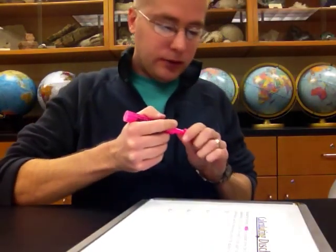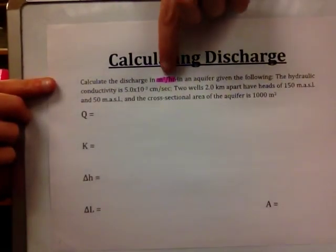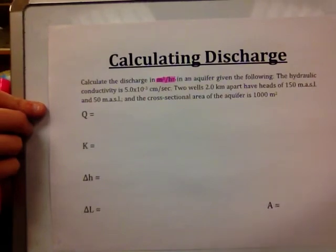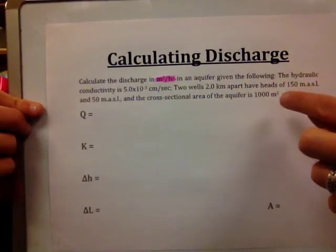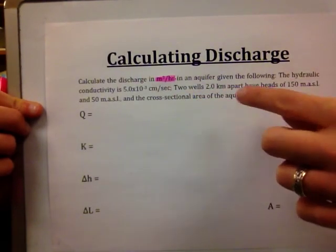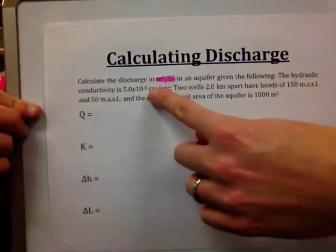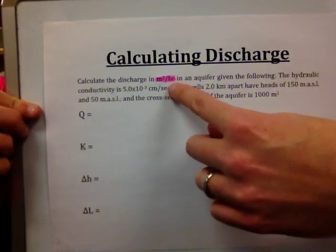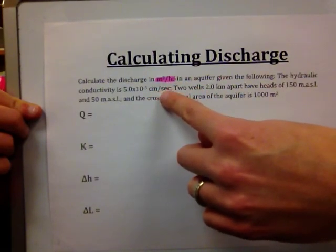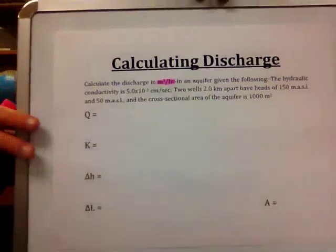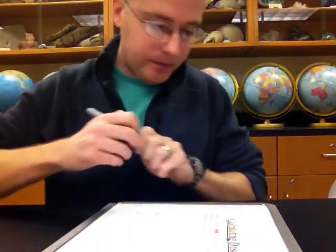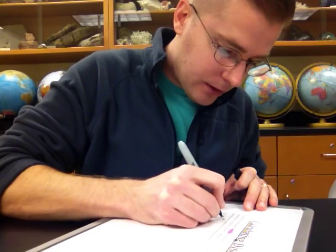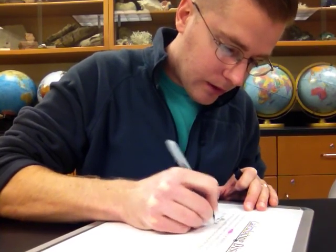The first thing I like to do is highlight the units we want the answer in: cubic meters per hour. That means everything with a distance unit has to be in meters, and everything with a time unit has to be in hours. So we'll need to do some unit conversions. The equation is Q equals K times delta H over delta L times A.